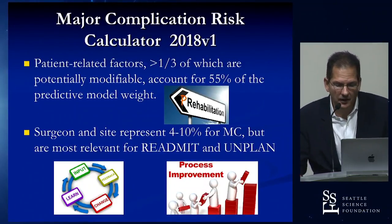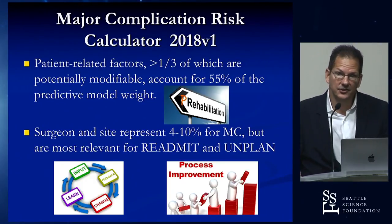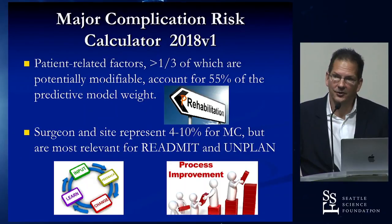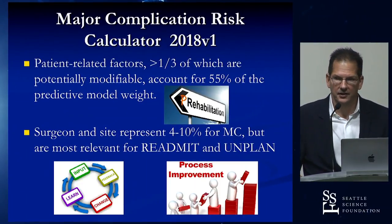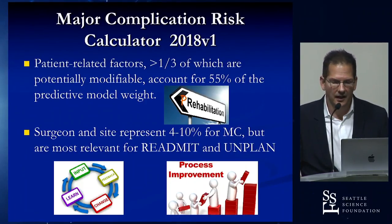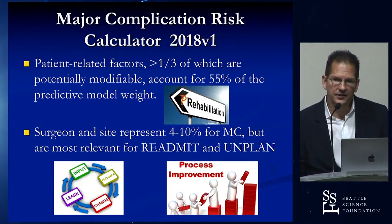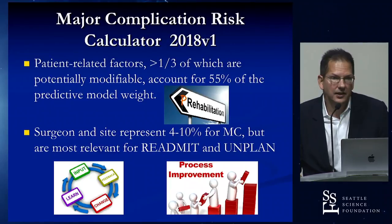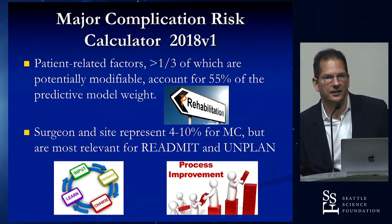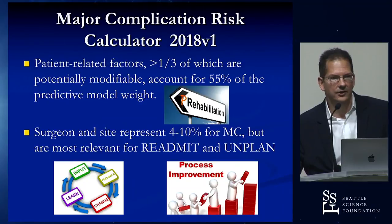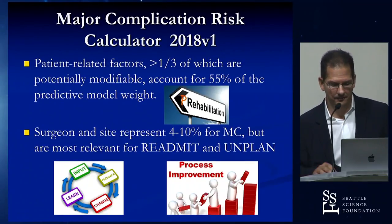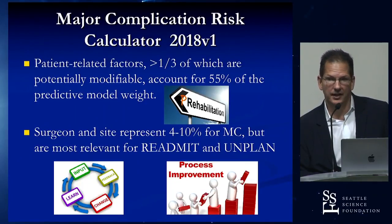We found that patient-related factors accounted for about 55% of the risk of major complication, and very interestingly, about a third of the contributing factors were potentially modifiable — things like preoperative activity levels and psychological issues. This raises the issue of prehab: we can now optimize patients, improve bone density, send them to psychological counseling, and try to take them from sedentary to intermittently active, which decreases major complication rates through aggressive, precise prehab protocols.